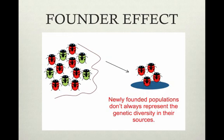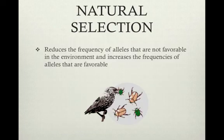The other type of genetic drift is the founder effect, which is when a small subset of a larger population founds a new population. Natural selection reduces the frequency of unfavorable alleles and increases the frequency of favorable alleles. Genetic drift and natural selection cause most changes in allele frequencies in an evolving population, but migration and mutations can also cause changes.